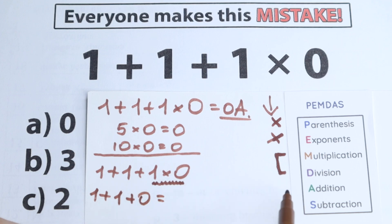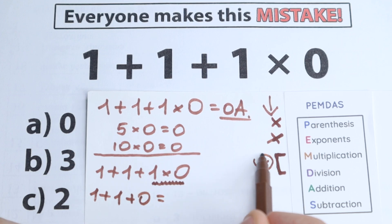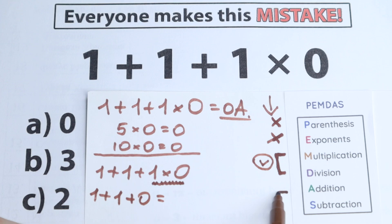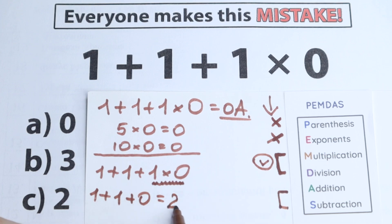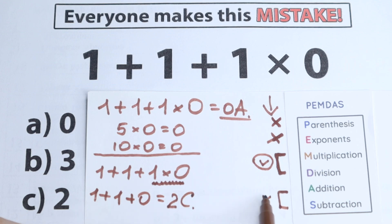We've completed the multiplication step. Now the last step is Addition and Subtraction — very simple addition: 1 plus 1 plus 0 equals 2, which is option C.